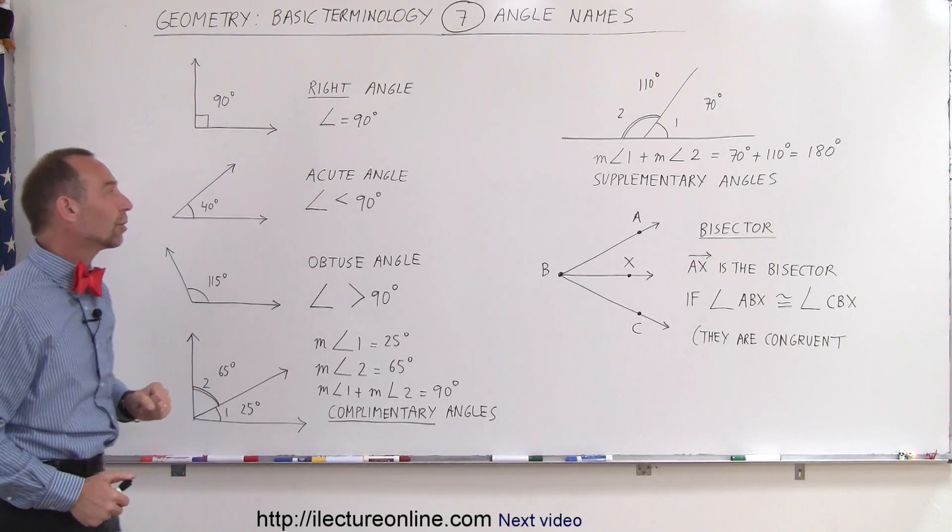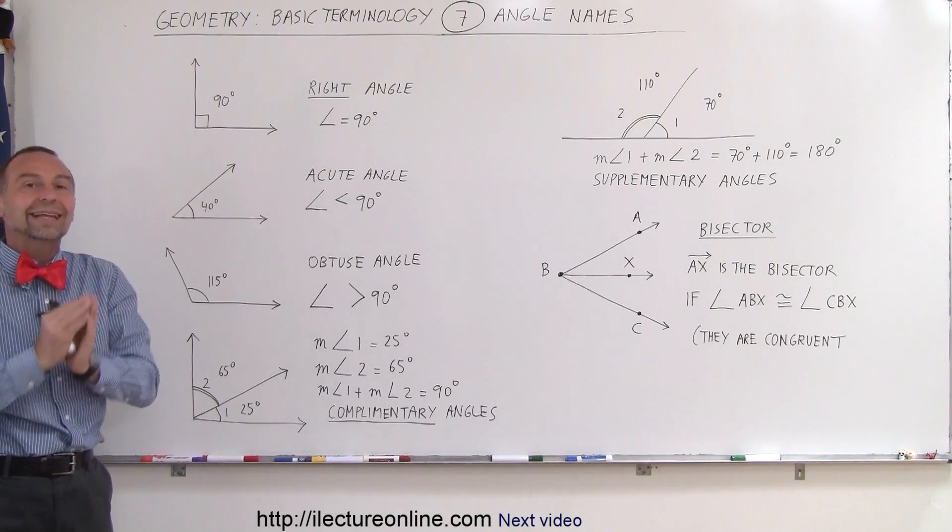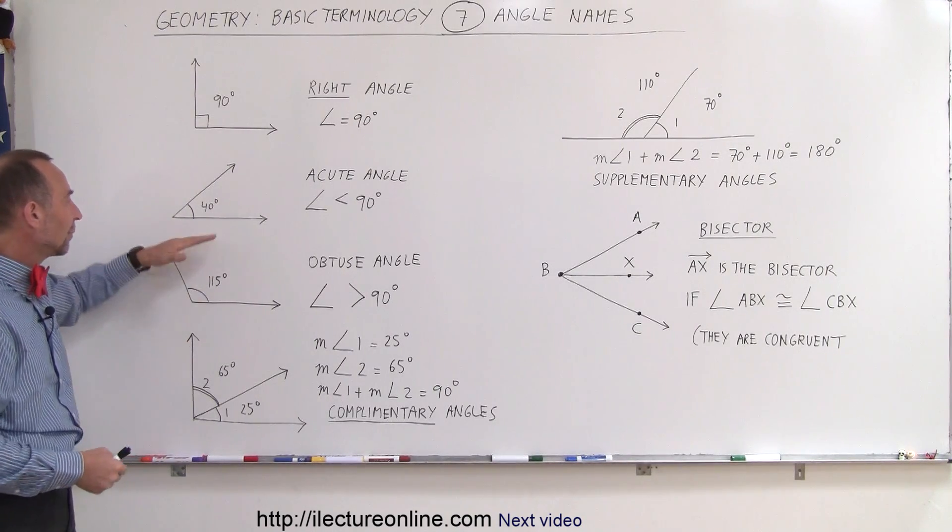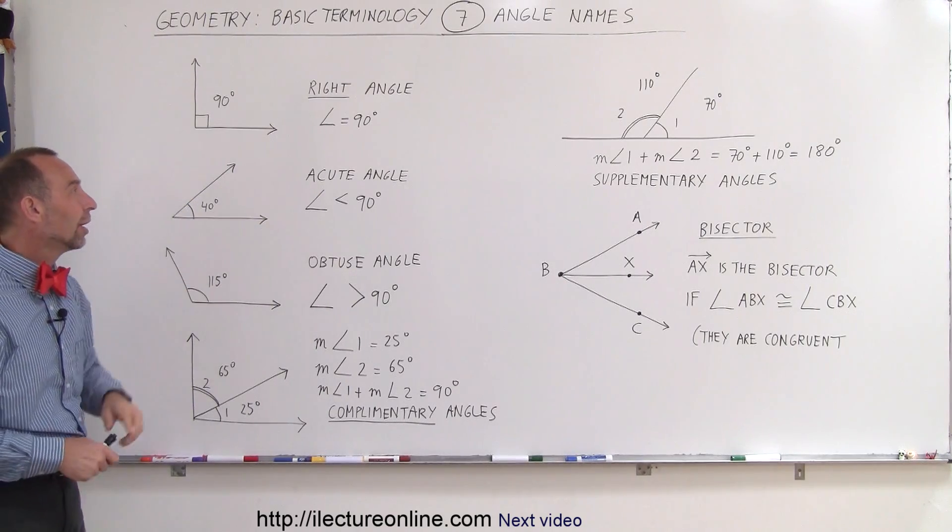The angle measure is equal to 90 degrees. An acute angle is where the angle measure is less than 90 degrees. So anywhere between 0 and 90 would be considered an acute angle. So here we have an example of 40 degrees, less than 90 degrees. We call that an acute angle.